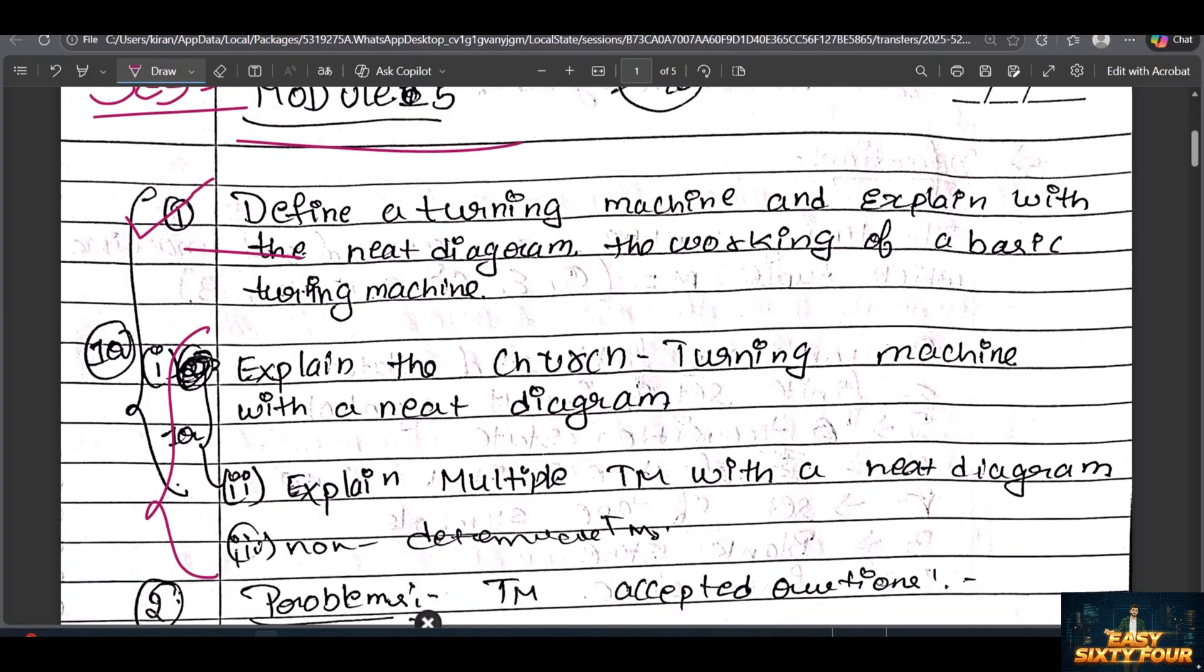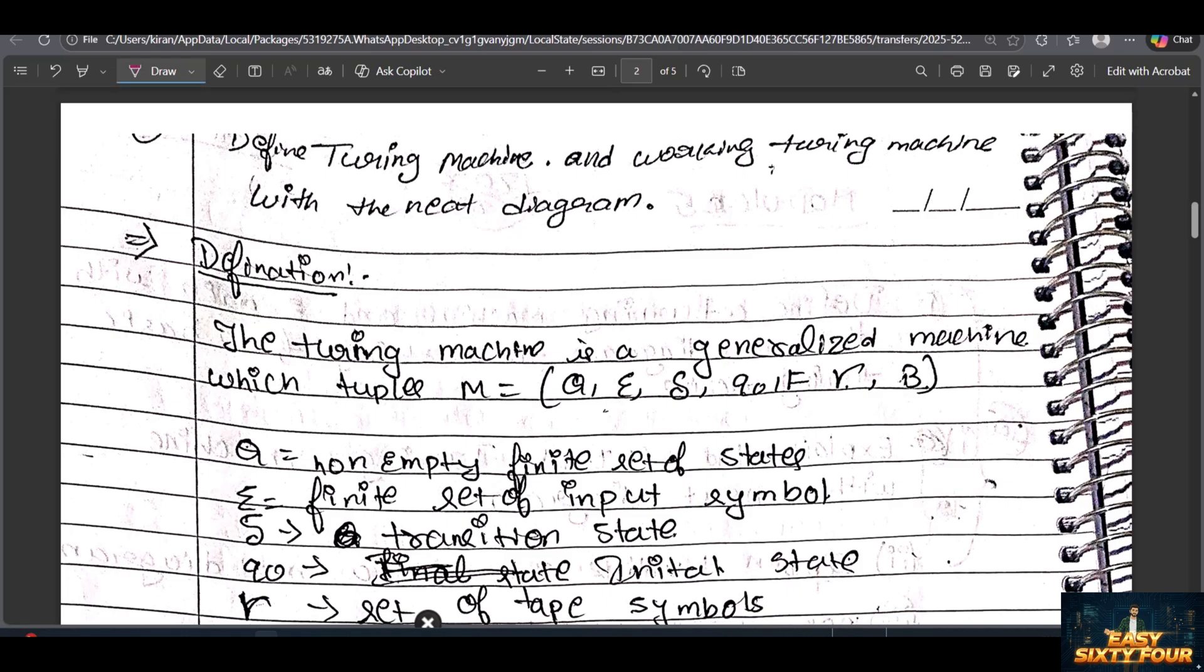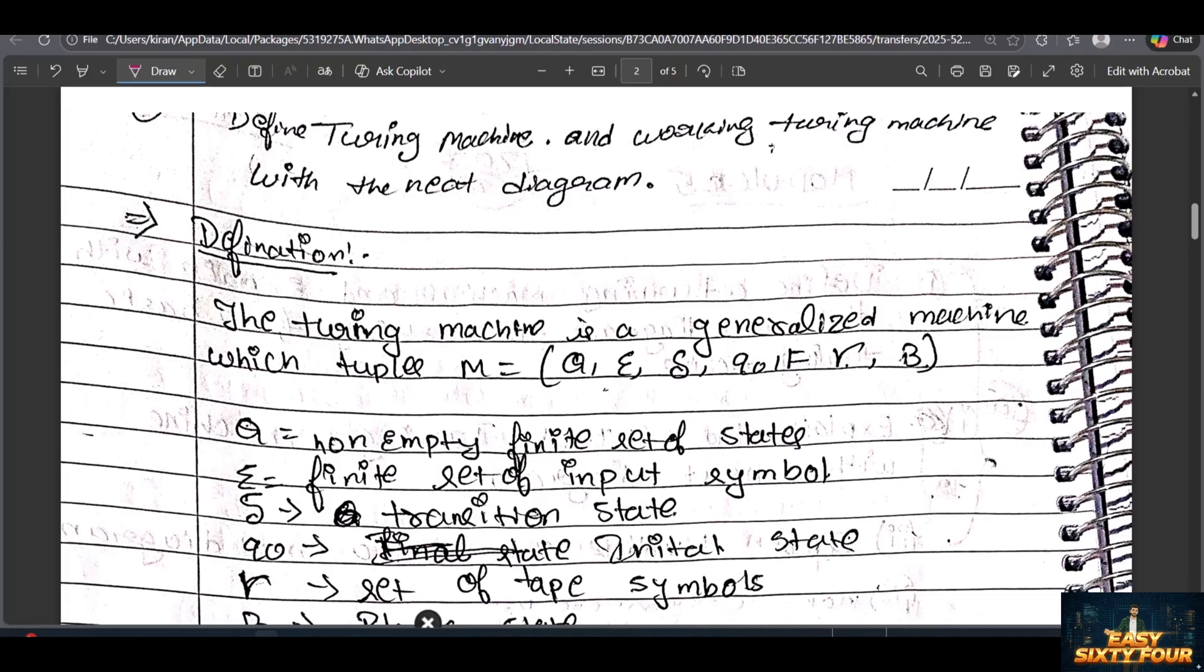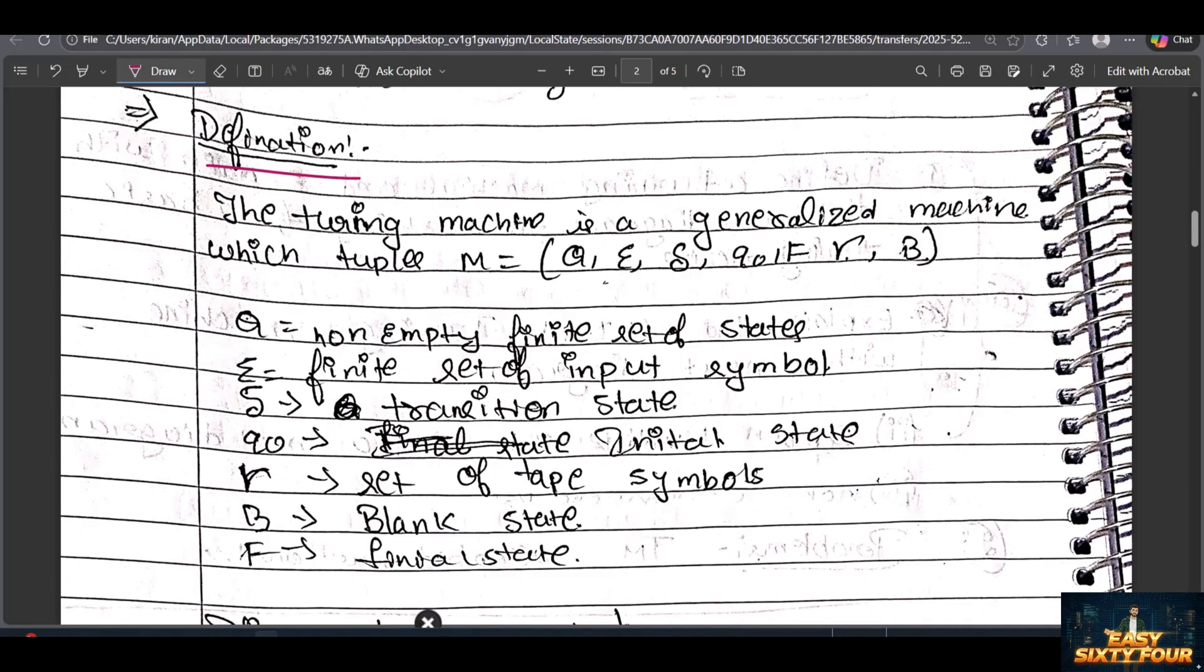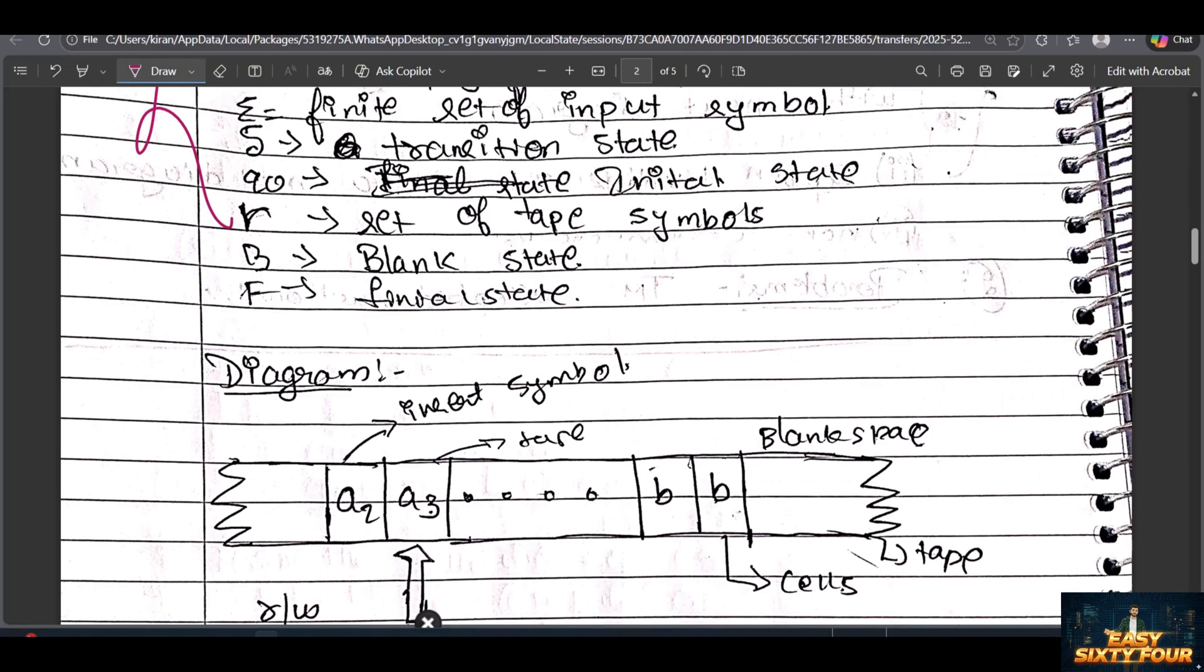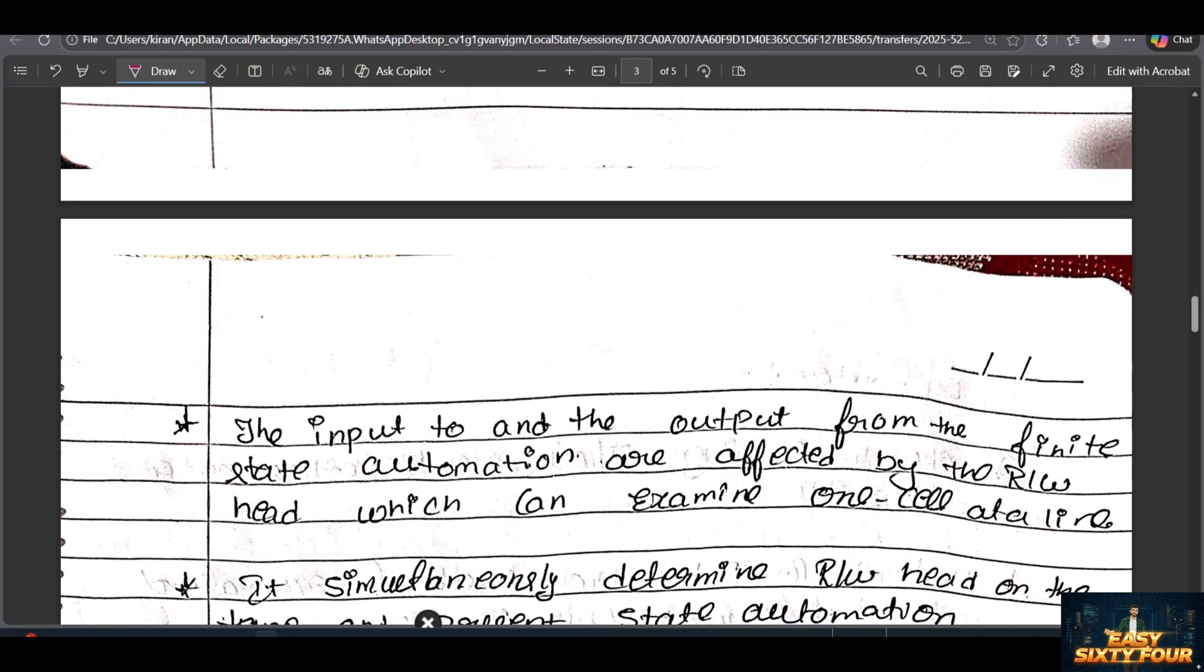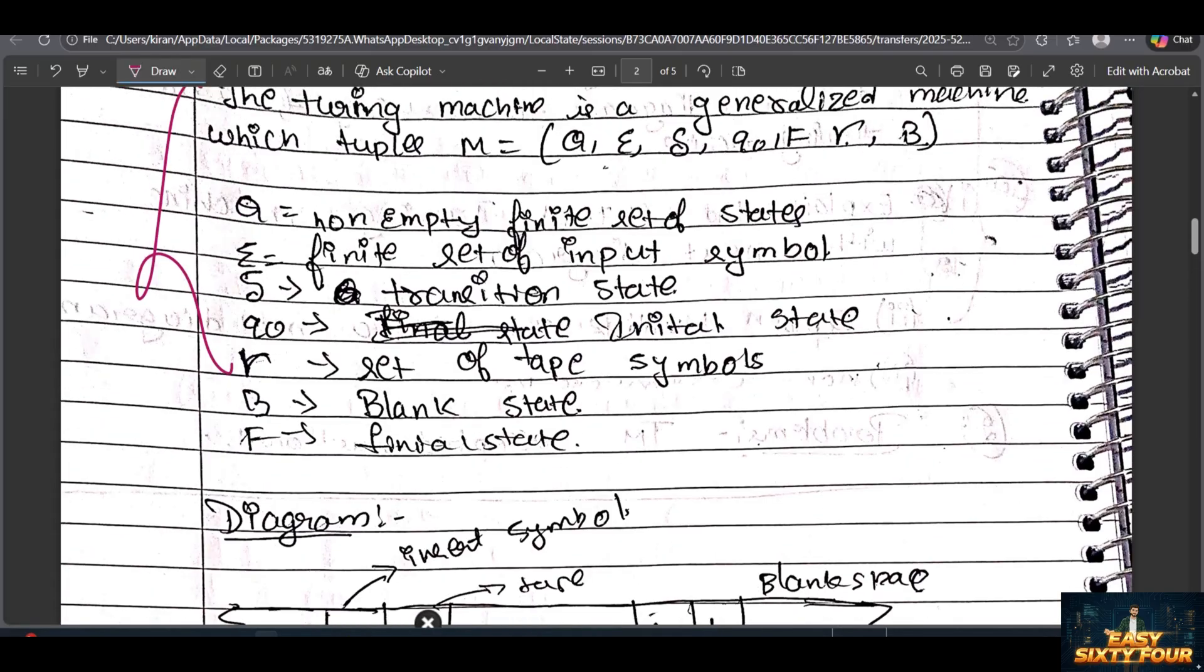If you want this answer, I will show you. Don't mug up, guys - just understand and write. In VTU paper correction, they will get only two minutes maximum. Let's see the definition. Turing machines - there is a definition. If you want this PDF, I will upload it in Telegram. You can see the diagram for two marks and working. That's it. You can easily read that question.